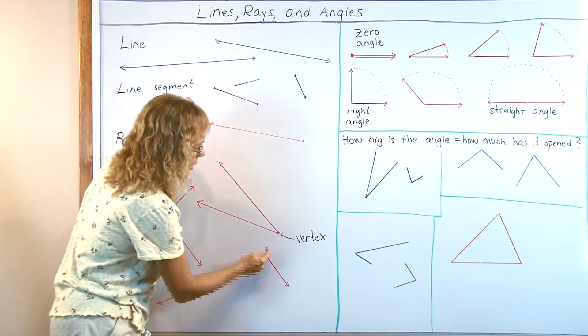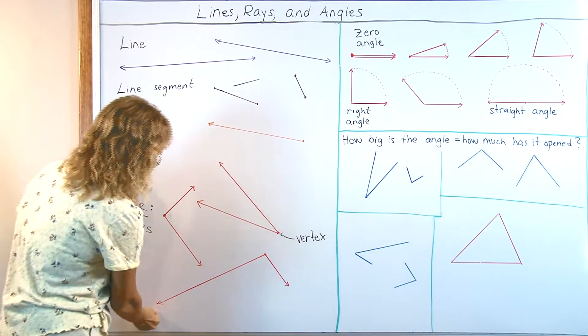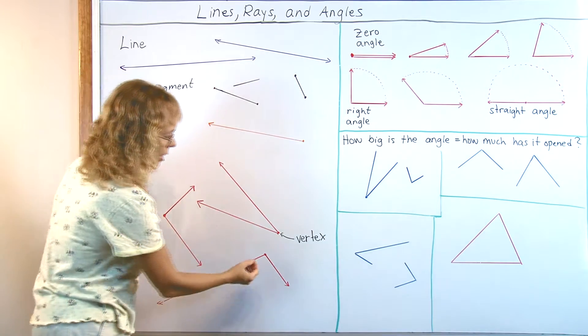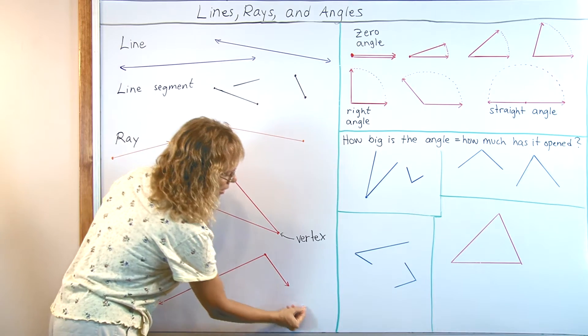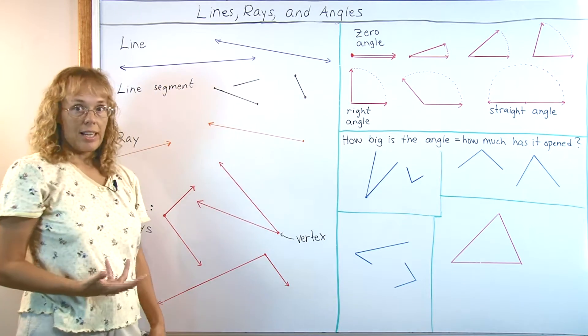Oh, here is an angle too. Two rays starting at this point. And look, this one wasn't even drawn as long as this one, but that doesn't matter. It is still an angle. But I draw my ray this far or this far, whatever. It still is an angle.